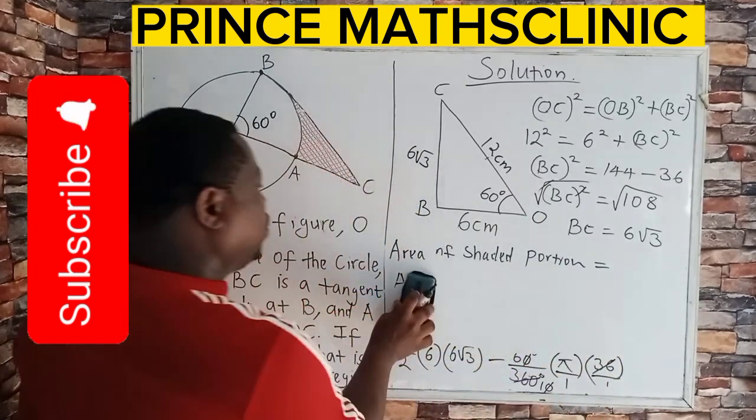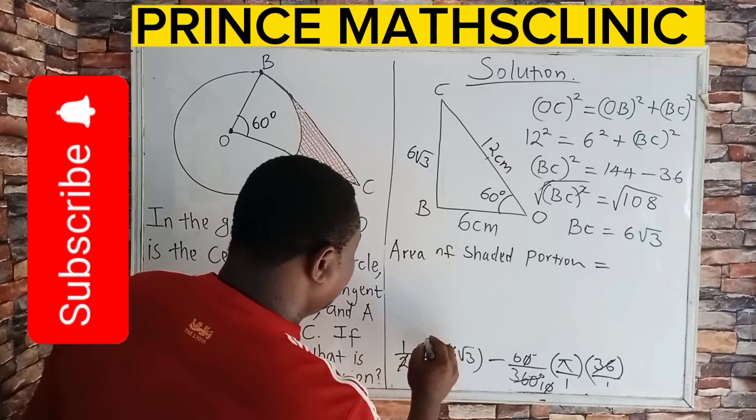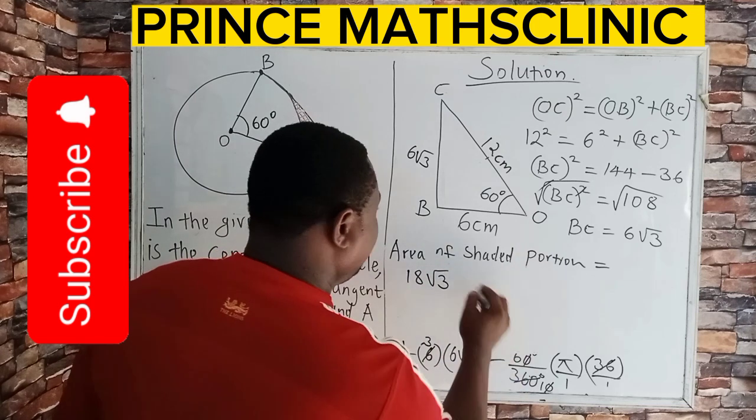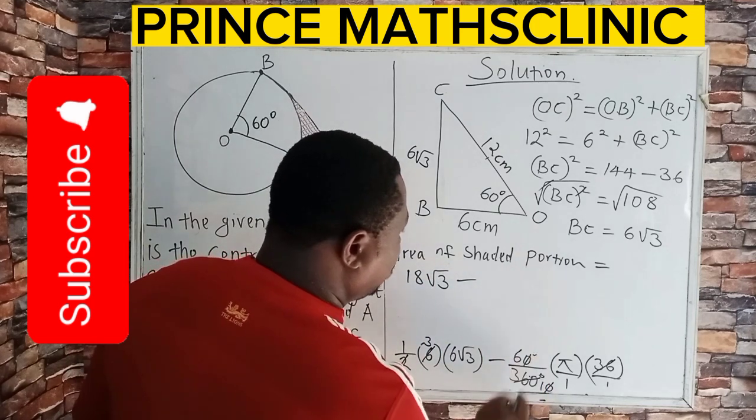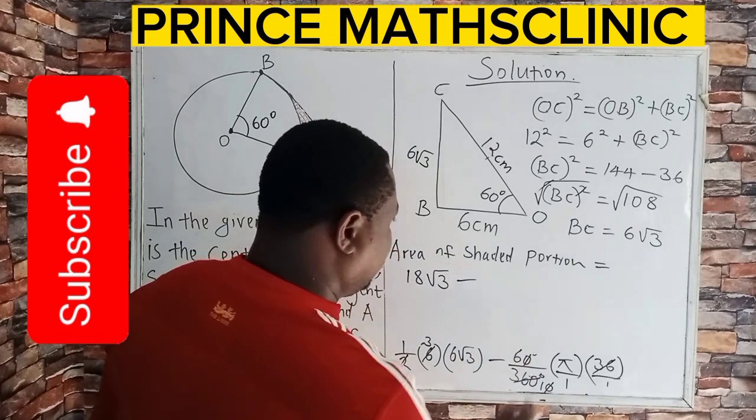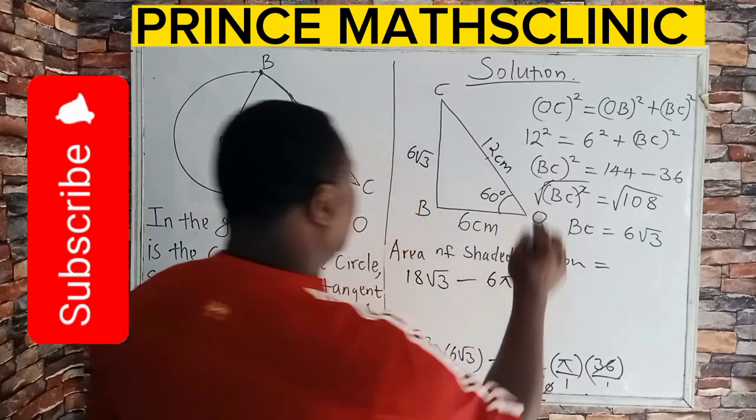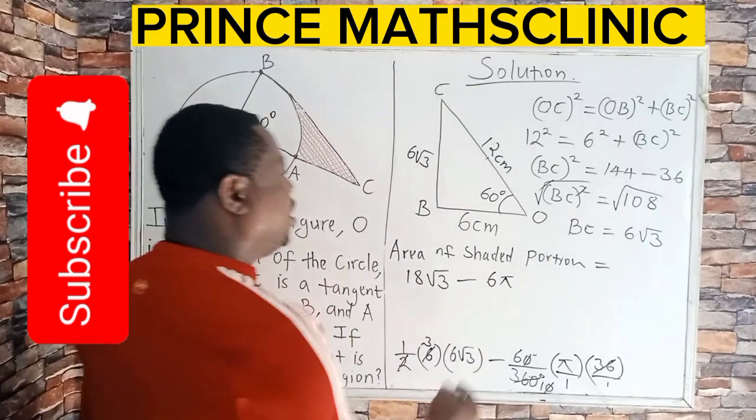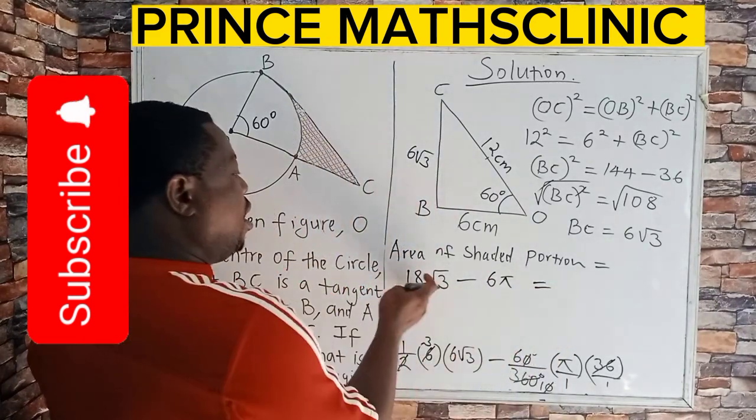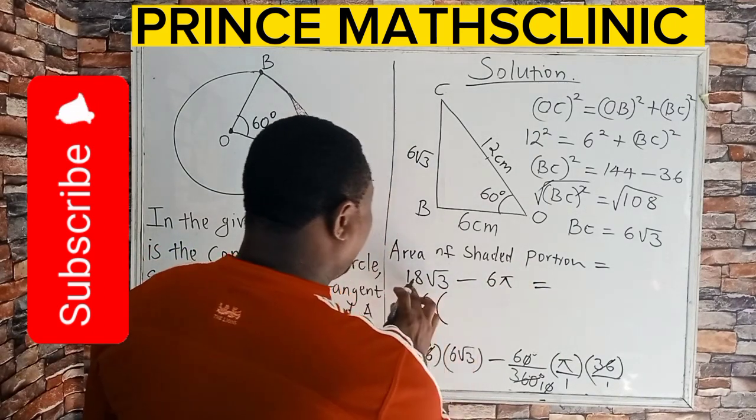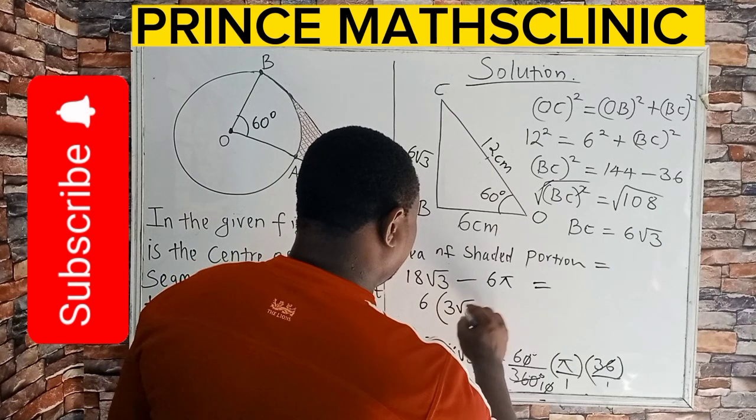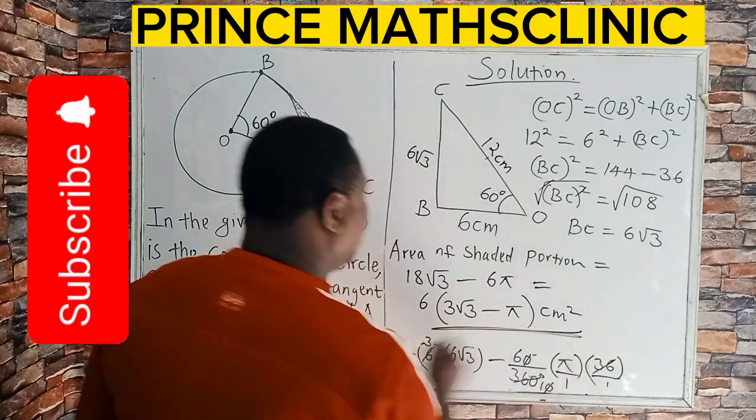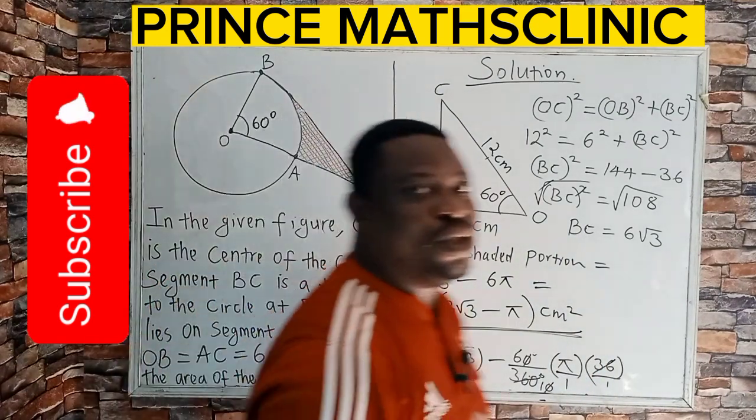So the area of my shaded portion, having done this calculation, 2 can go here 3 times. So 3 times 6 is 18 root 3. Then minus, now we have found this place to be, we are left with 6, then pi. So therefore, the area of the shaded portion is 18 root 3 minus 6 pi, which you can further express by factoring out 6. So therefore, I am left with 3 root 3 minus pi centimeters squared. That is the area of the shaded region in the question.